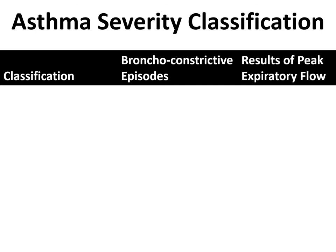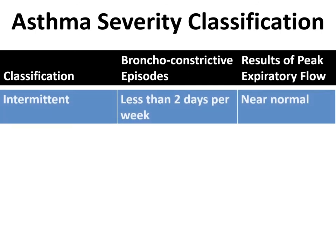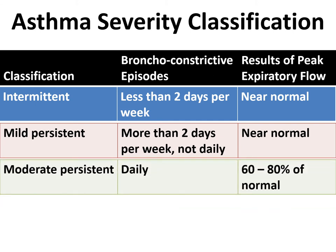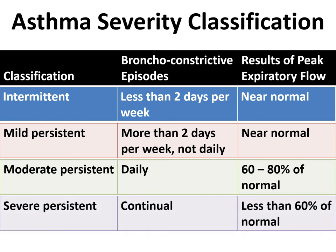Asthma can be classified according to severity. Intermittent: less than two days per week, peak expiratory flow near normal. Mild persistent: more than two days per week, not daily. Moderate persistent: daily, peak expiratory flow up to 80 percent. Severe persistent: continual attacks with peak expiratory flow less than 60 percent. The severe persistent form is also called status asthmaticus.